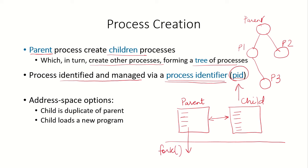The fork system call is used by the parent and the operating system will create the new child process. When the child is created, it has the same set of instructions — it is a duplicate copy — so it can continue being a duplicate of the parent. That is one address space option.